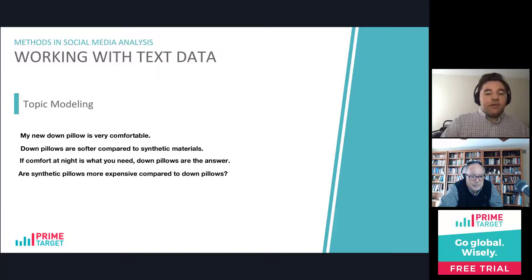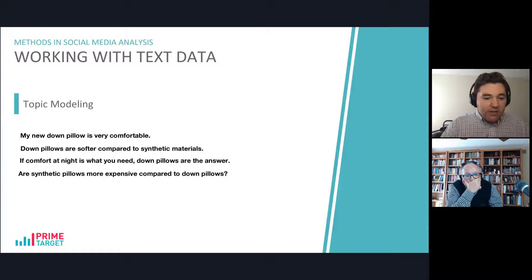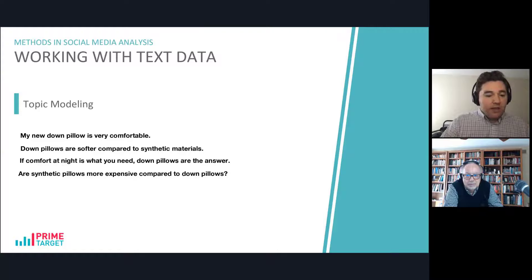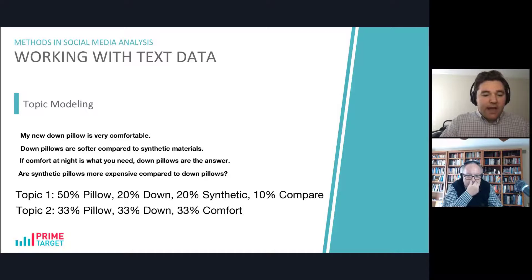Here's an example. Let's say that we are a pillow manufacturer and we're trying to understand what conversations are going on in the public social media space about pillows. Maybe you have these four tweets: 'My new down pillow is very comfortable.' 'Down pillows are softer compared to synthetic materials.' 'If comfort at night is what you need, down pillows are the answer.' 'Are synthetic pillows more expensive compared to down pillows?' If we were to do a topic modeling analysis on these four tweets, we might come up with two different latent topics. The first one being about 50% pillows, 20% down material, 20% synthetic, and 10% comparing — making it fairly clear that the first topic is comparing synthetic pillows to down pillows.